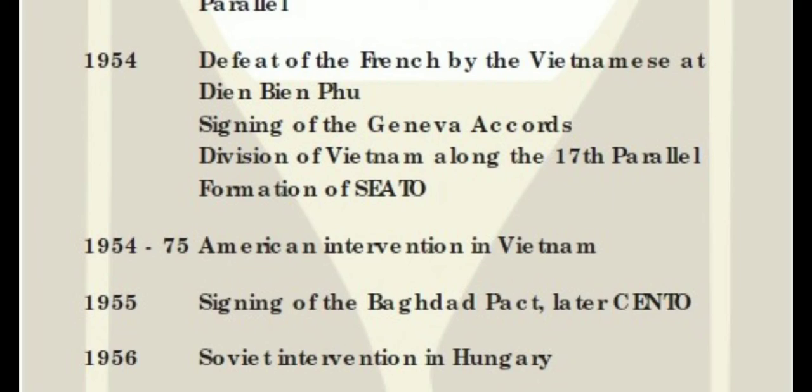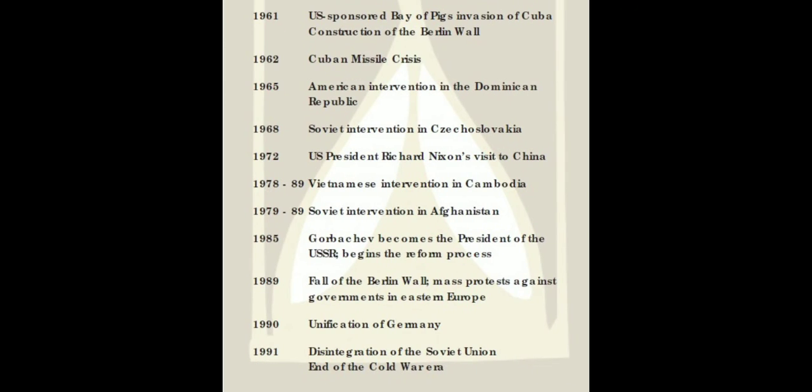Another arena of the Cold War is Hungary. In 1956, the USSR intervened in Hungary, and the US countered it — this is the Hungary case of 1956.